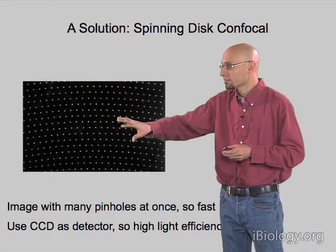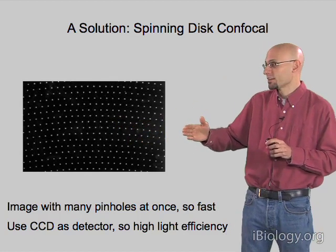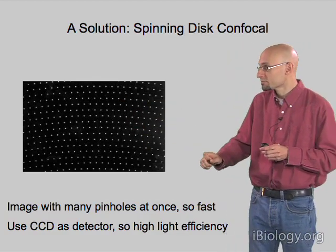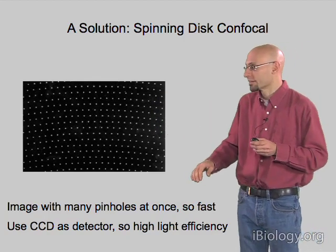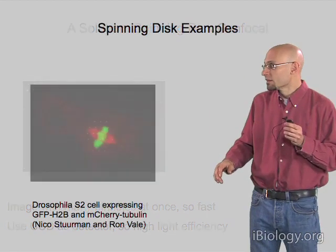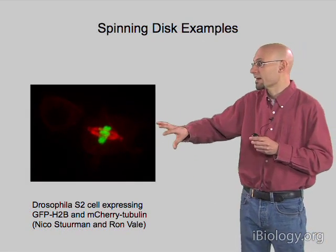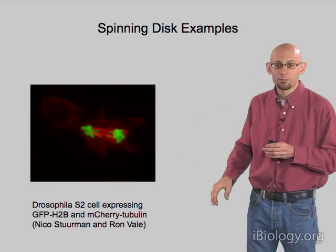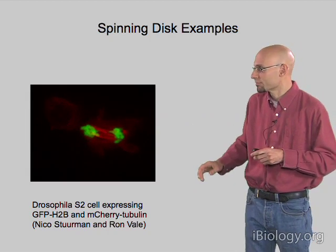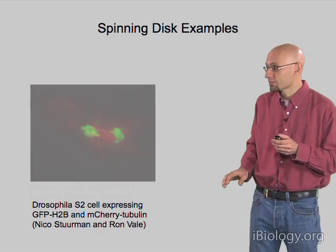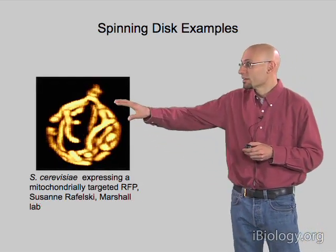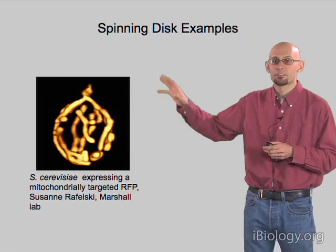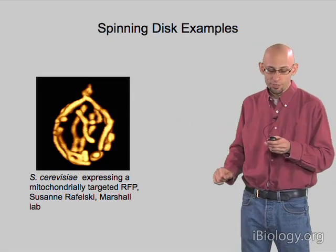Here is an image I took of our spinning disk with the disk parked, just shining light through it — you can see the pinhole grid of this piece of the disk, and it rotates such that these pinholes sweep out over every point in the sample once and only once. Here's an example of a movie acquired with a spinning disk confocal — a time-lapse movie of a dividing Drosophila S2 cell, about 15 minutes compressed to a few seconds. Because they're fast and high light efficiency, spinning disks are very good for live samples. Here's also a 3D reconstruction of a yeast cell expressing a mitochondrially targeted RFP.